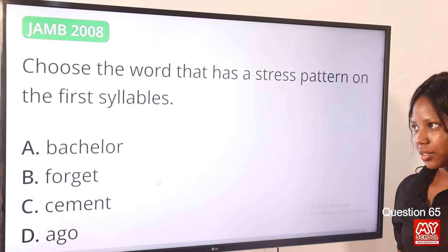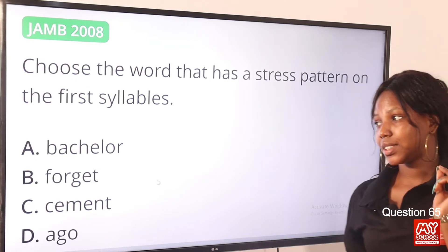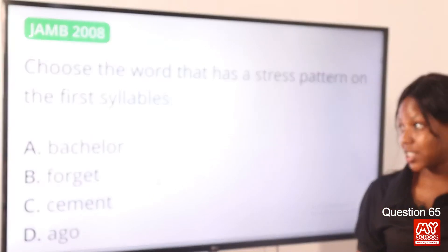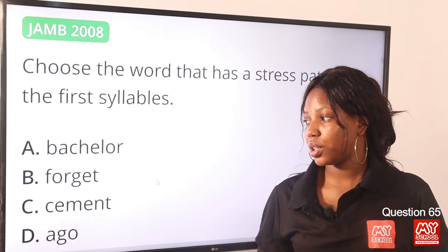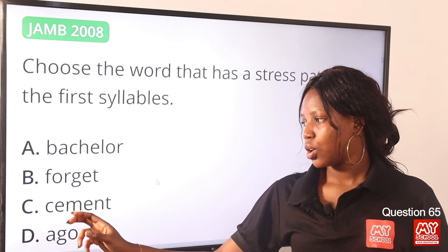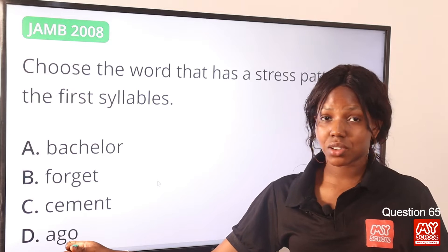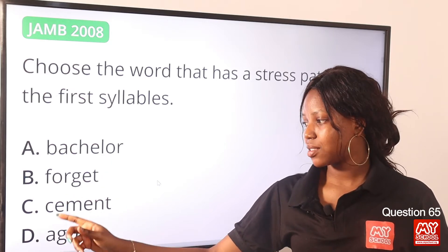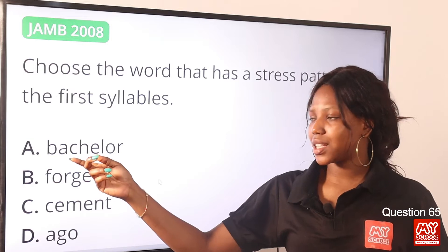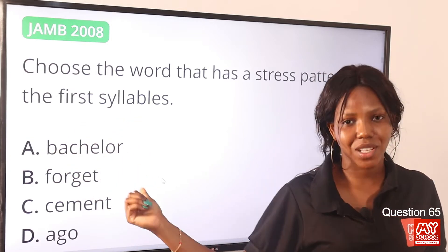Question 65. Choose the word that has a stress pattern on the first syllable. Option A: partial. Option B: forget. Option C: cement. Option D: ago. For options B, C, and D, the stress is on the second syllable — forget, cement, ago. For option A, it's on the first syllable — partial. So option A is the correct answer.